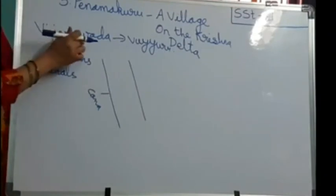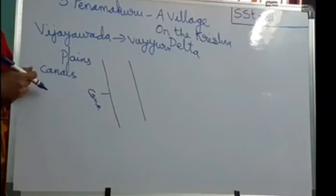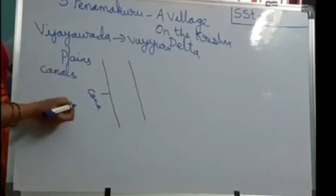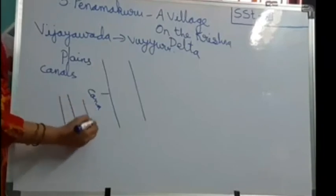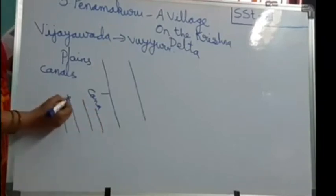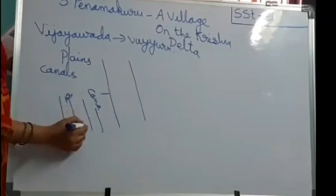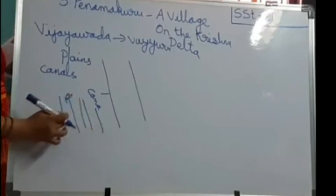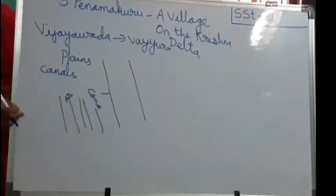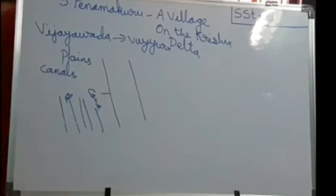When our professors were walking, they observed a number of canals and many channels. Channels are the small water passages in between the agriculture crops — plants on either side with water flowing in between. They also saw channels lined with green trees. Now let us see about the Bandar Canal and how our professors reached Penamakuru village.